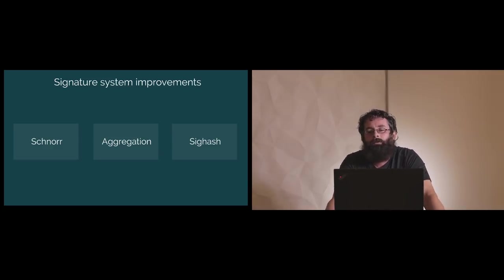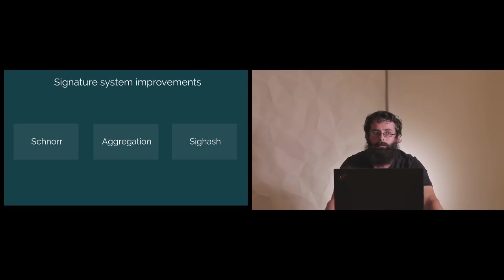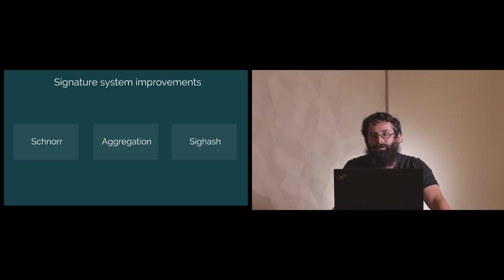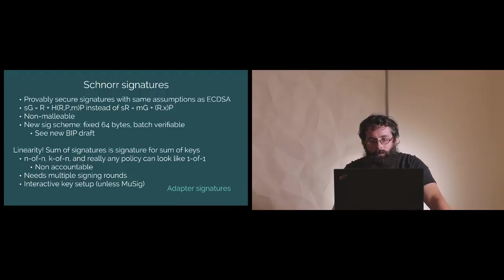Specifically, of the improvements I want to talk about, I want to discuss three things: one is Schnorr signatures — some of you may have seen that a couple days ago I published a draft BIP for incorporating Schnorr signatures into Bitcoin. I will also be talking about signature aggregation, in particular aggregation across multiple inputs in a transaction. There is the signature system and the integration — we should talk about them separately. And third, I also want to talk about signature hashing, because there are a number of developments there as well.